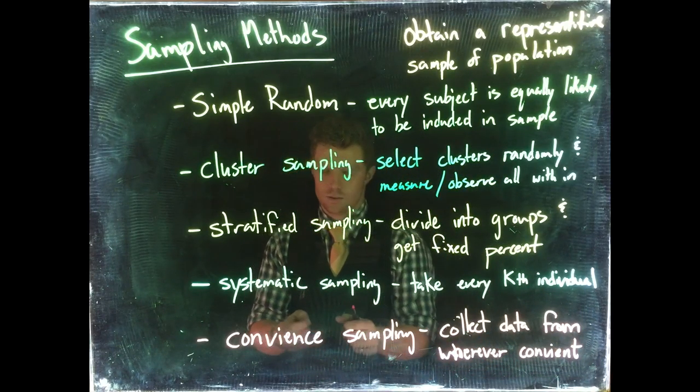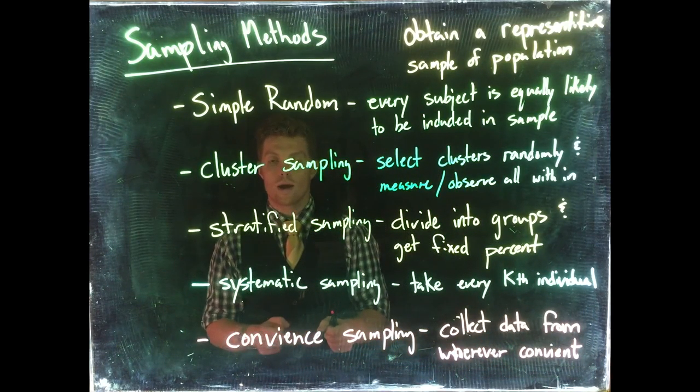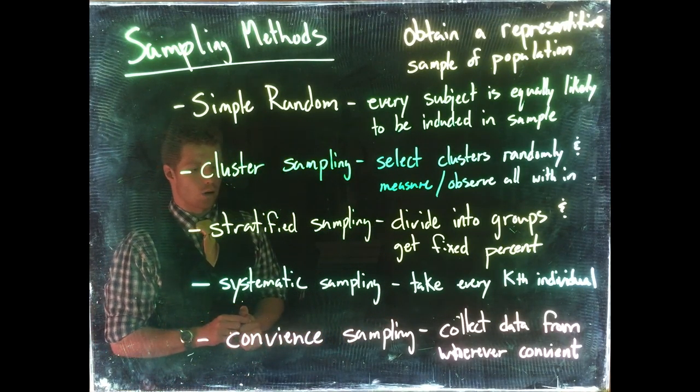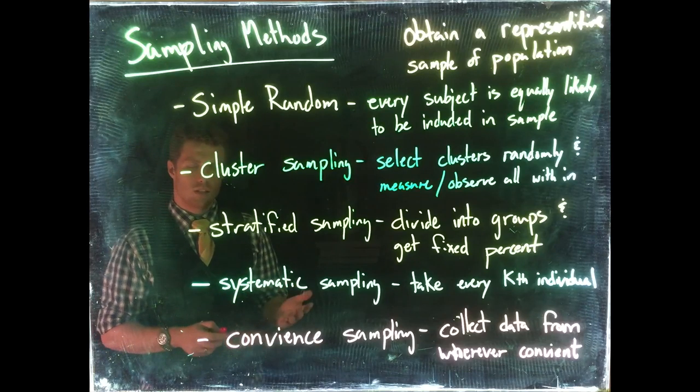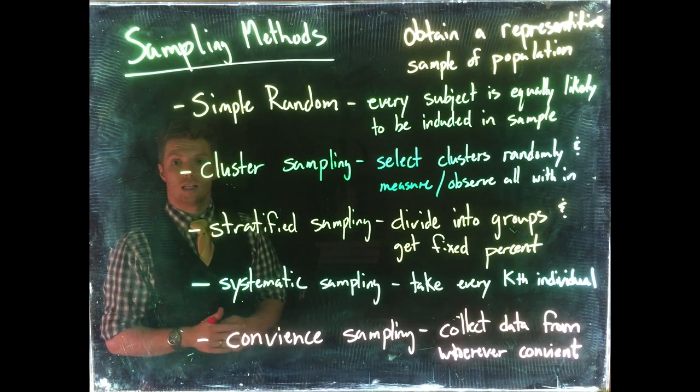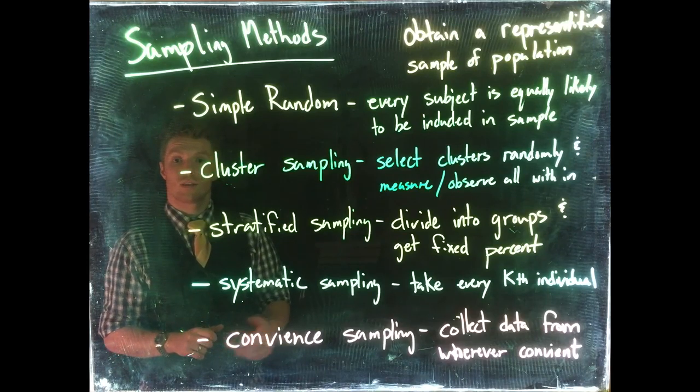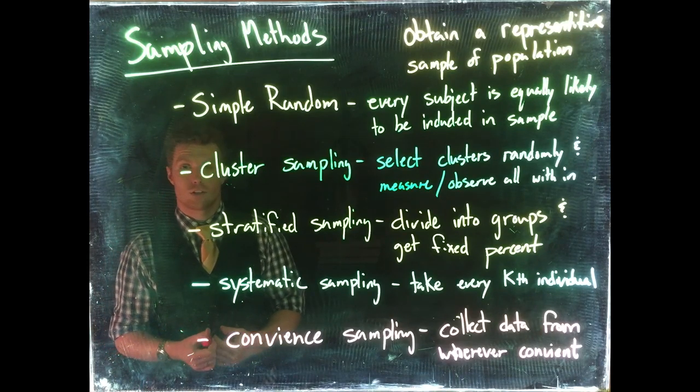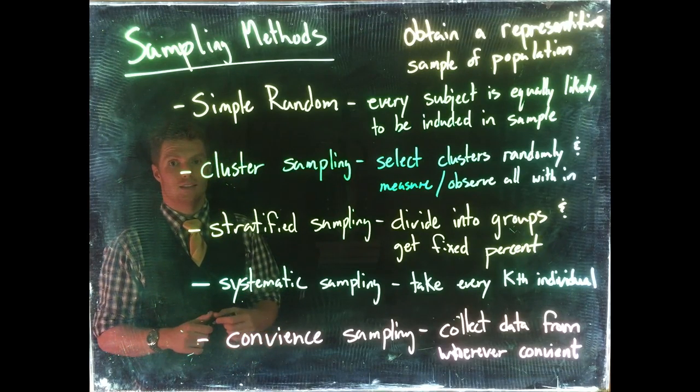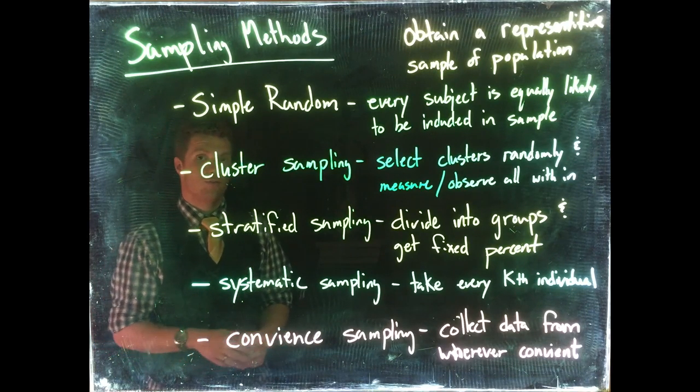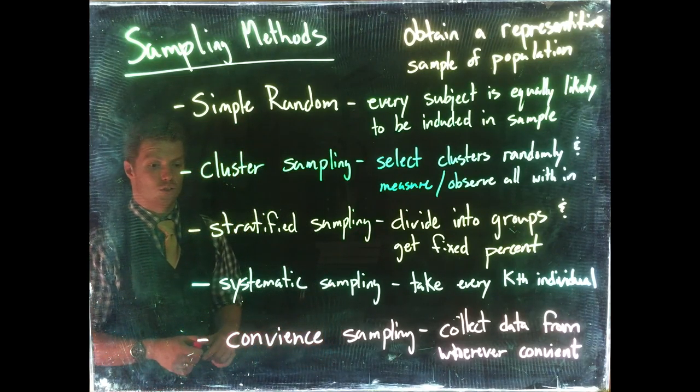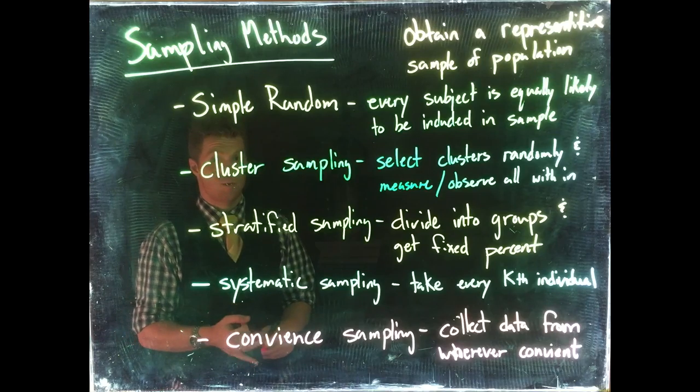This is typically a poor way to do sampling because it is very often not representative of our population. A convenience sampling example: let's say we're dealing with Casper College and I stand in front of the library and take the first 10 people to walk in. The problem is those people may not be very representative of all Casper College students - these are students who need to be in the library, maybe they need the resources or they're really motivated learners, and that's not super representative of the entire population.